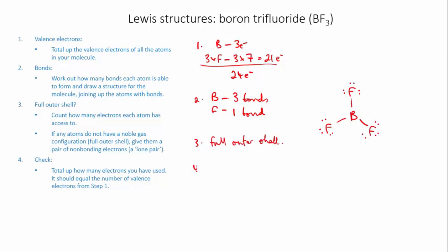And then we check our totals. So in my structure here I have two, four, six, eight, ten, twelve, fourteen, sixteen, eighteen non-bonding electrons and then six bonding electrons and eighteen plus six is twenty-four. So I have the right number of electrons, so I'm all good.